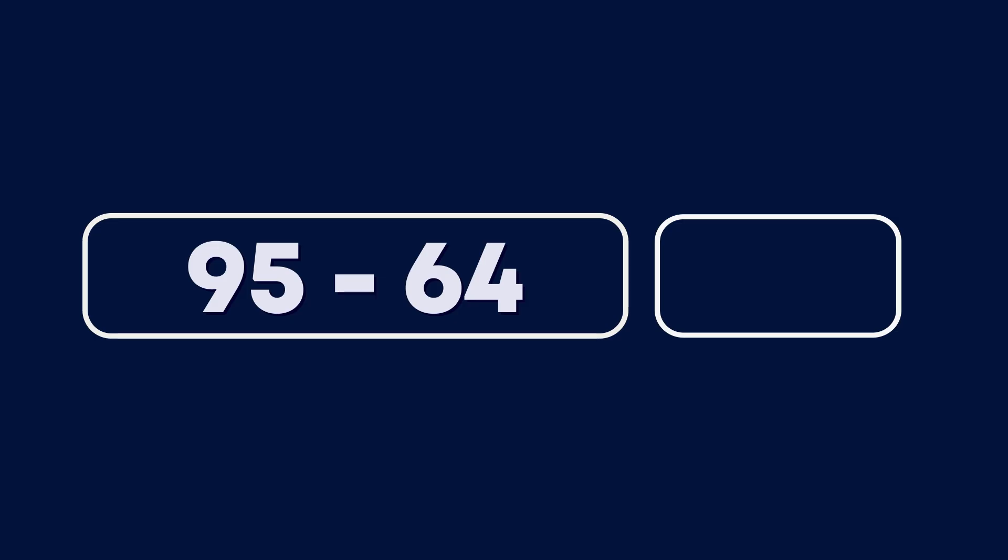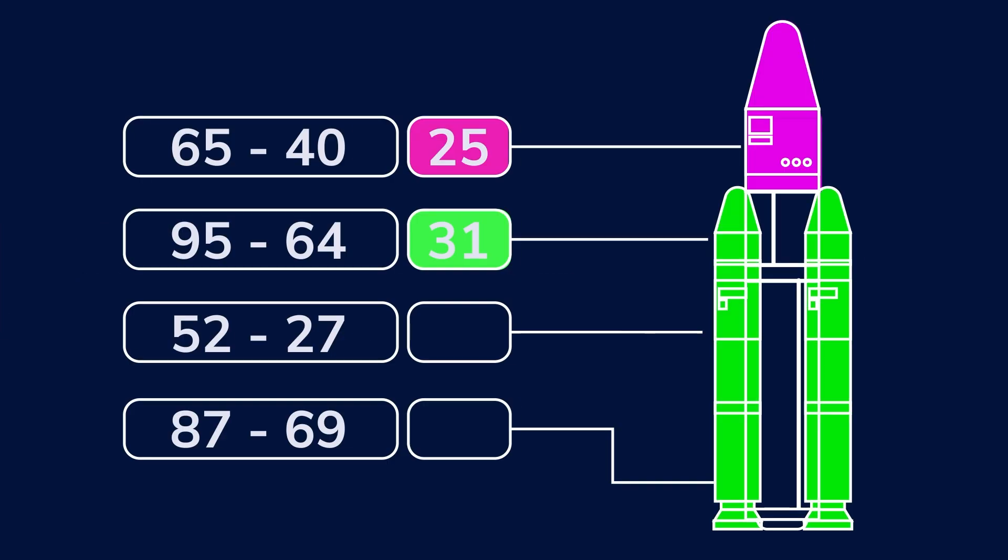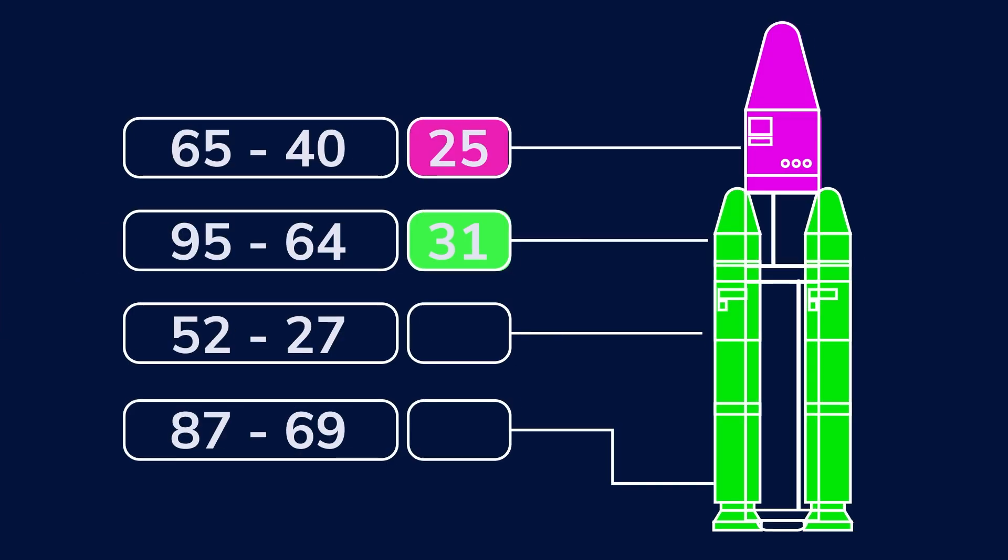That means 95 minus 64 equals 31. 31 is the next number in the code.